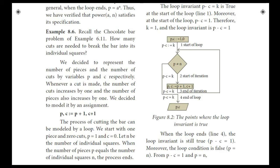The chocolate bar problem asks: how many cuts are needed to break the bar into individual squares? We represent the number of pieces as P and the number of cuts as C. Whenever a cut is made, the number of cuts increases by 1 and the number of pieces also increases by 1.